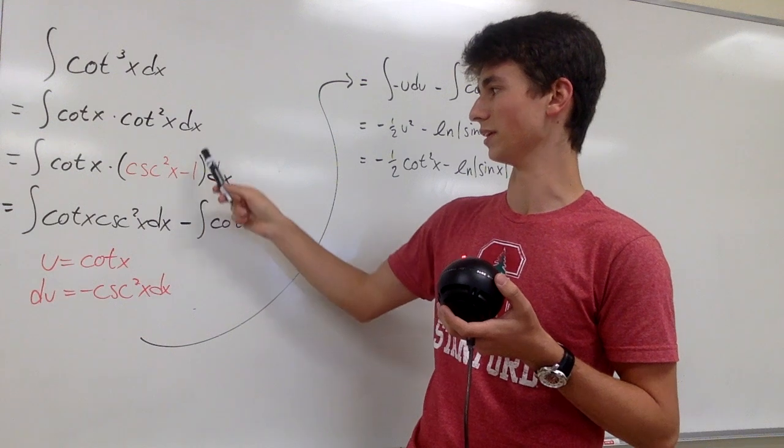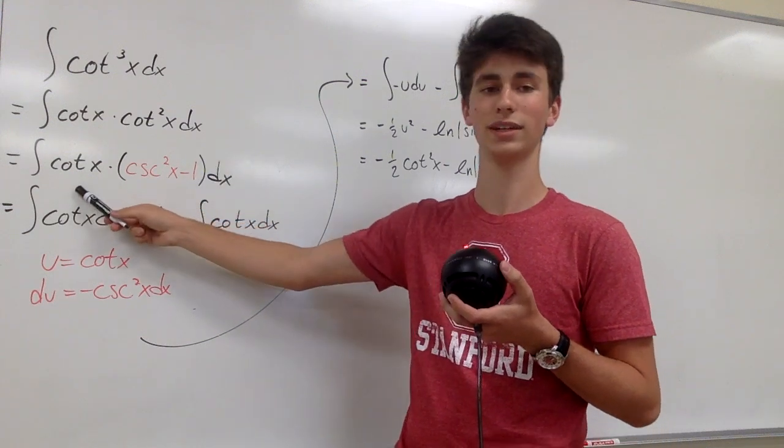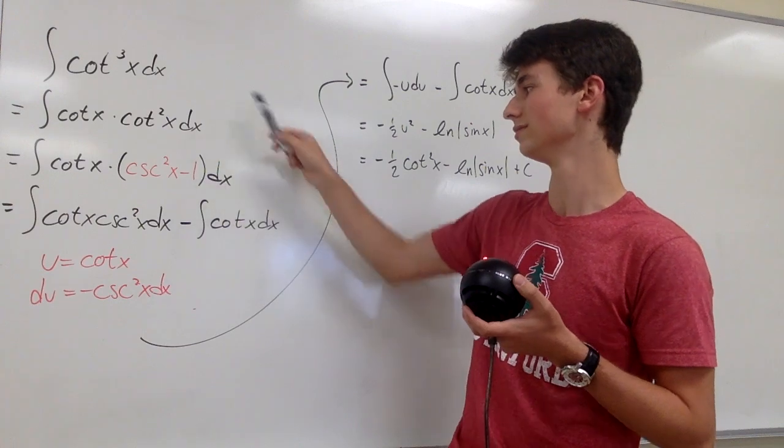And we can plug it in right here. So we get cotangent of x times cosecant squared of x minus 1 dx.